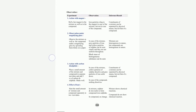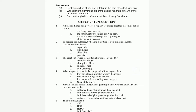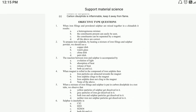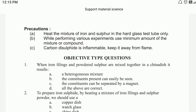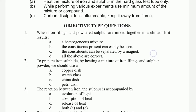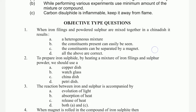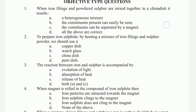Inference and result: effect of heat. Then the experiment precautions and objective type questions. Precautions: heat the mixture of sulfur and iron in a hard glass test tube only while performing the experiment.